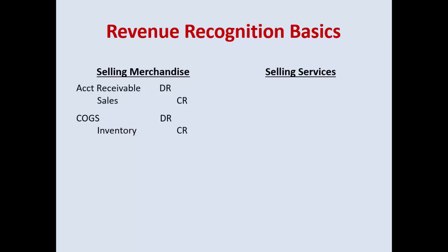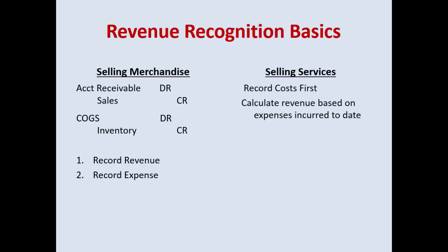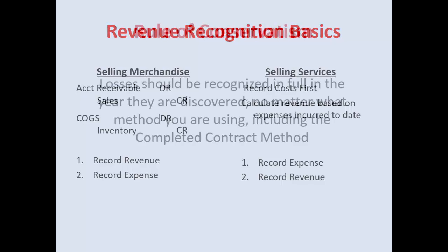Looking at a few basics first: a traditional journal entry debits accounts receivable and credits sales, then matches cost of goods sold against inventory. When selling services, it's often easier to calculate revenue by recording cost first, then calculating revenue based on expenses incurred — so you're doing it backwards. Keep this in mind when going through percentage of completion: you really are recording the expense first and then calculating what revenue should be.